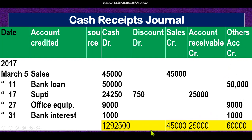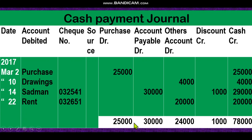Now the cash payment journal. The format: date, account debited — earlier it was account credited, now it is account debited — check number, source, then the debit columns: purchase debit, accounts payable debit, others account debit; and the credit columns: discount credit, cash credit. All types of cash payments are recorded in the cash payment journal.